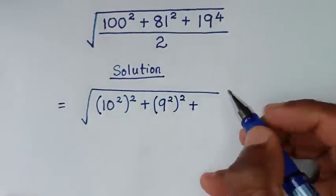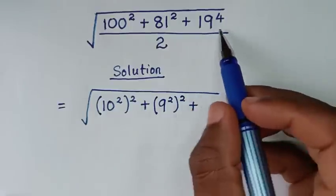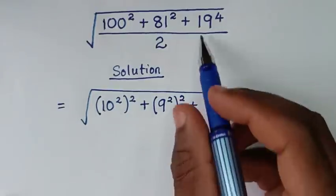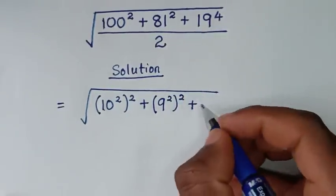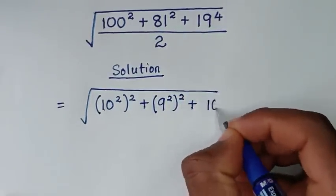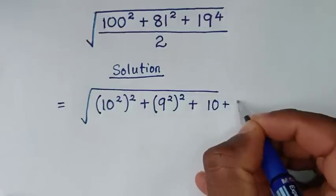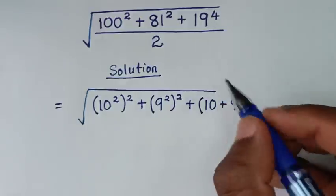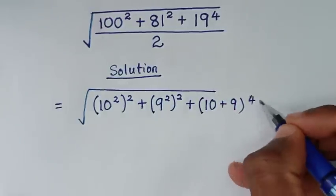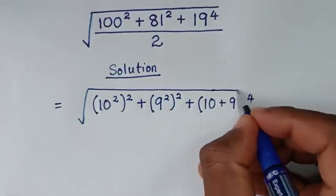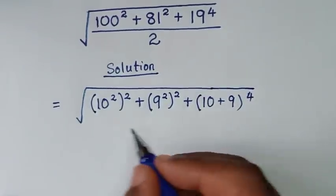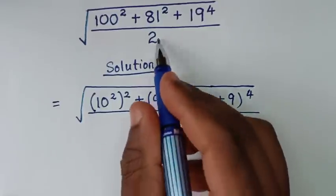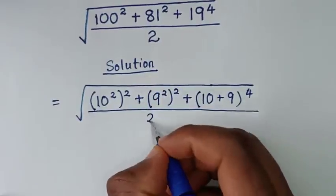Plus, from here, 19. Now 19 has common parts 10 and 9, so 19 is the same as 10 plus 9. We write (10 + 9) to the power of 4, then over 2.